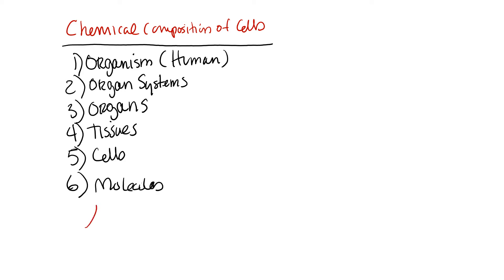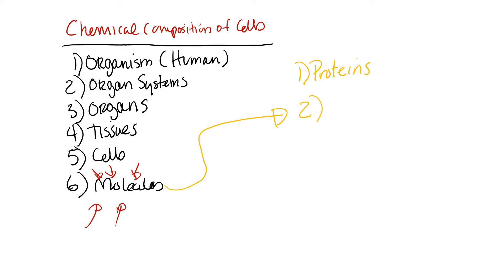This is why we're here. The three molecules we'll focus on are: first, proteins. Proteins in or around the cell are involved in cell recognition and also in enzymes, which help the cell perform reactions very fast. The second type of molecule is carbohydrates. Carbohydrates have many functions, but simply put, they are used by the cell for energy.